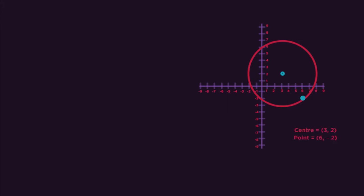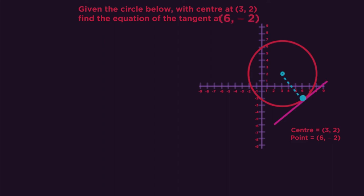We know the centre is at 3,2 and the tangent is at 6,2. So we use this to find the gradient of the radius.